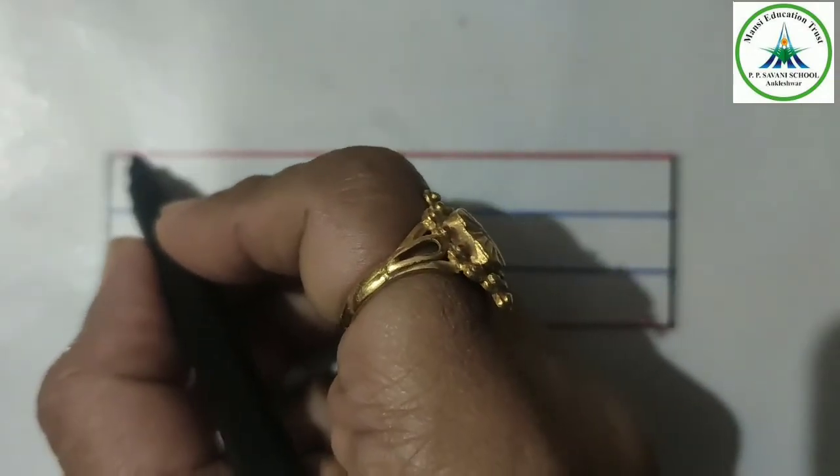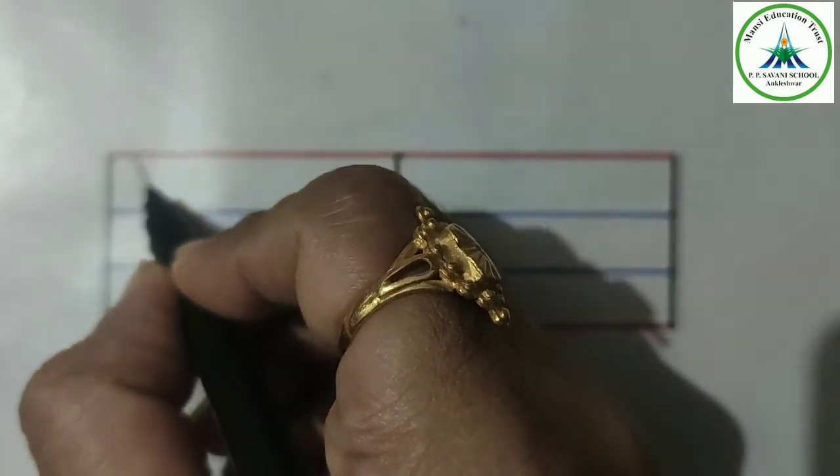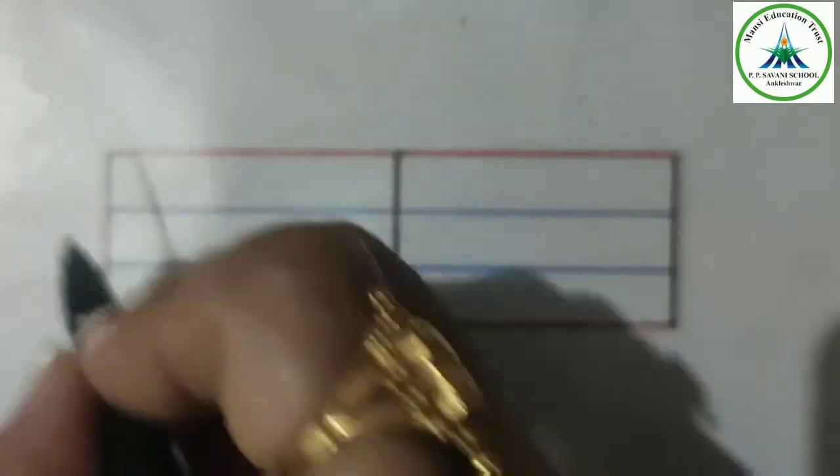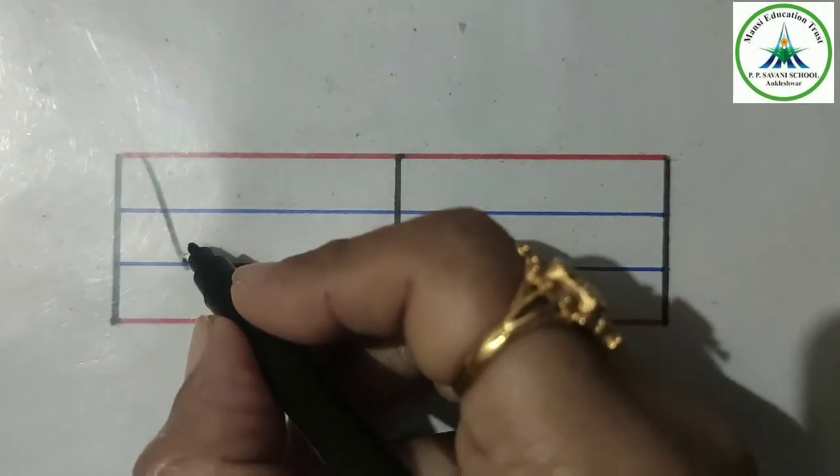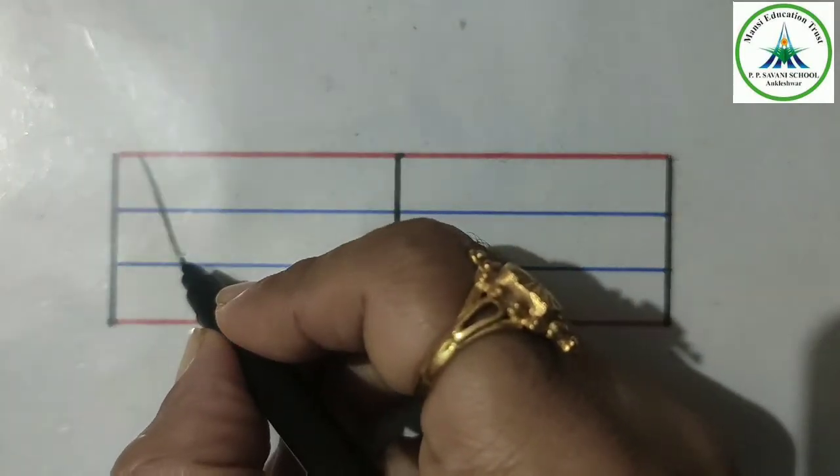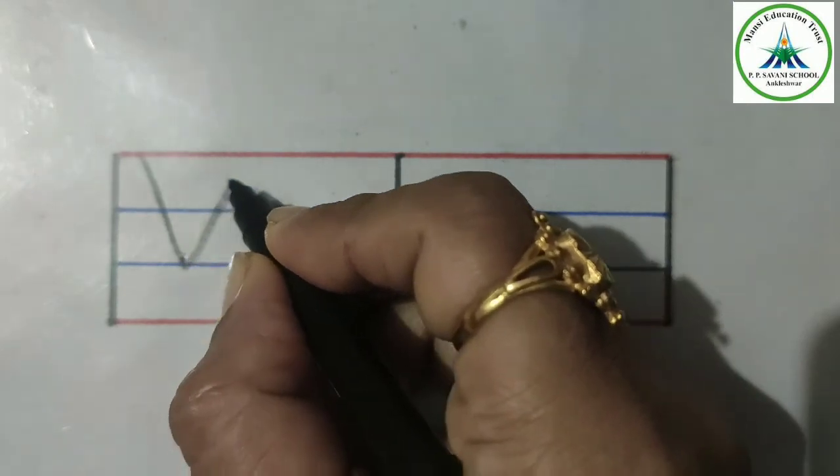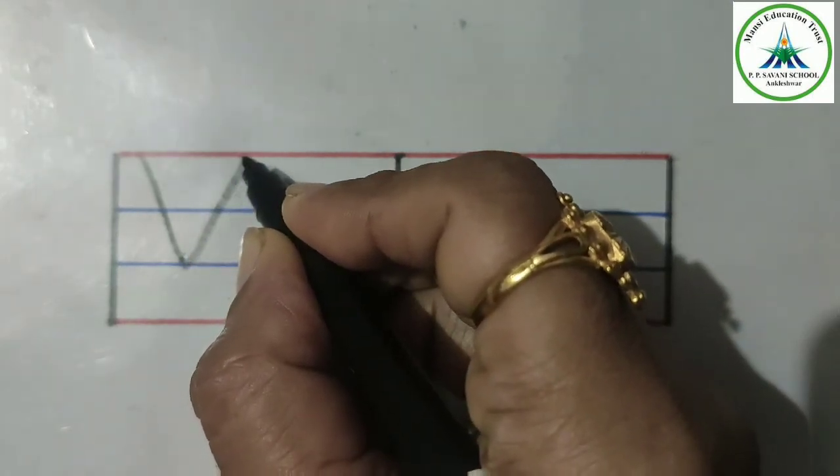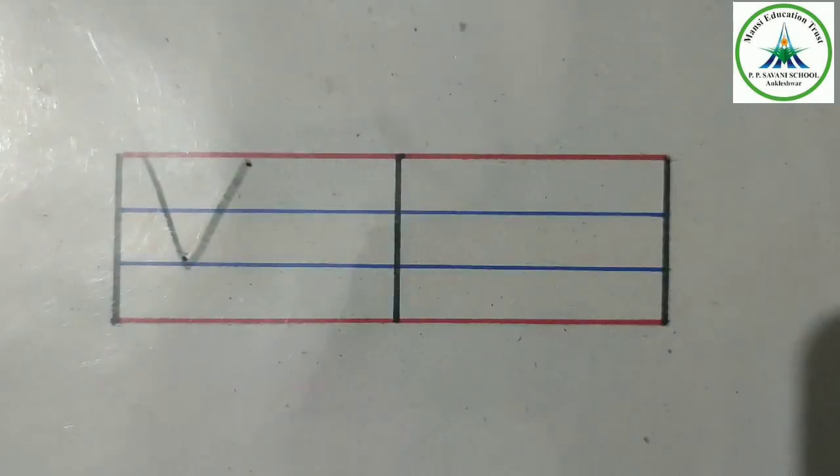So to write capital letter V, start from the red line and make a slanting line, right side slanting line. Then start from the down and make opposite slanting line up to the first line.